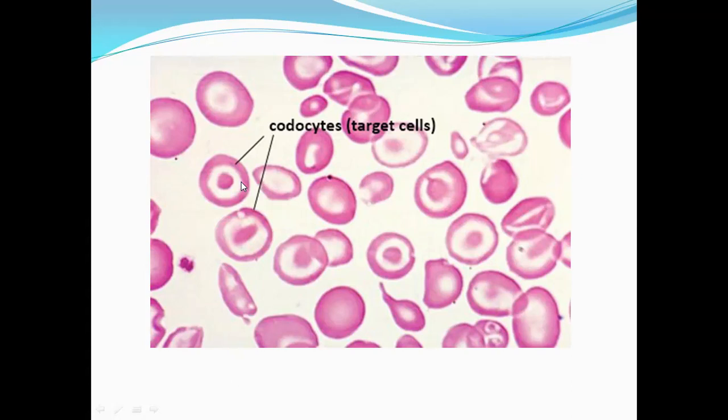They gave a reticulocyte picture and asked what these cells are — those are reticulocytes. They also asked what other cell inclusions can be mistaken for reticulocytes, including Hemoglobin H inclusions.